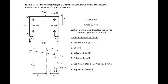In this example problem we're going to find the nominal strength of our column if our column is loaded at an eccentricity of 15 inches from the center. This is going to cause an axial load and it's also going to cause a moment equal to P times our eccentricity. So we have a moment and an axial load in our column.